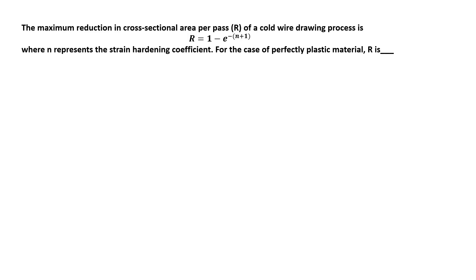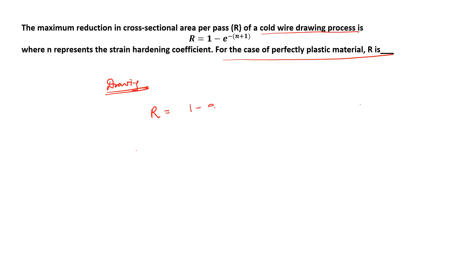There was a recent doubt asked: the maximum reduction in cross-sectional area per pass in a cold wire drawing process is r = 1 - e^(-(n+1)), where n represents the strain hardening coefficient. In the drawing process, this formula is r = 1 - e^(-(n+1)), which is given over here.